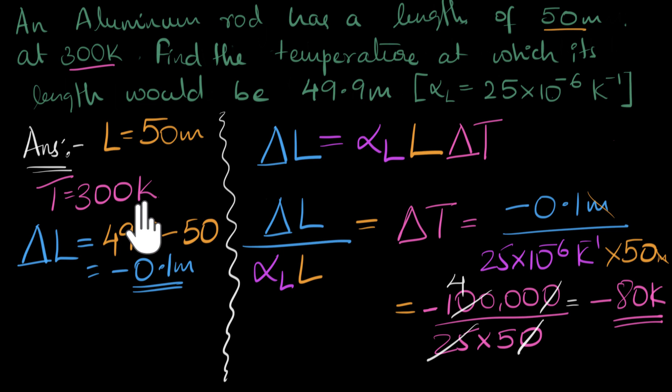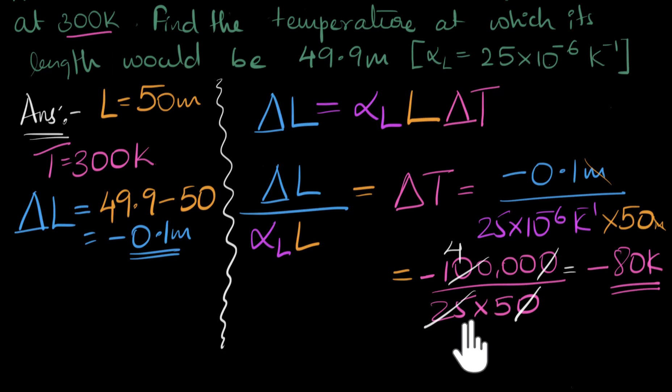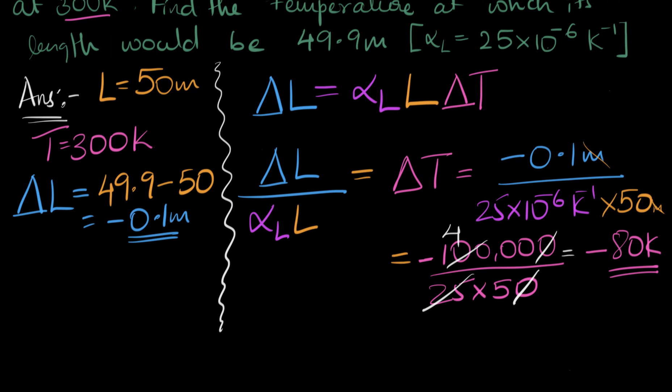Well, the current temperature is 300. We need to decrease the temperature by 80. So what is the final temperature? Let's just write that down. Make some more space here. All right. So the final temperature would be the current temperature 300 minus 80. And that would be 220 Kelvin. Ta-da! That is the answer. So that is the temperature at which the whole thing would shrink to 49.9 meters.